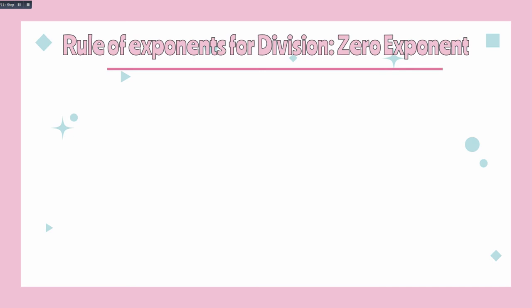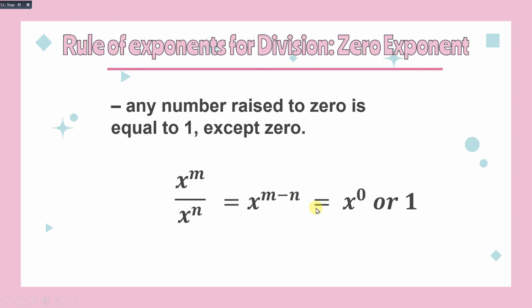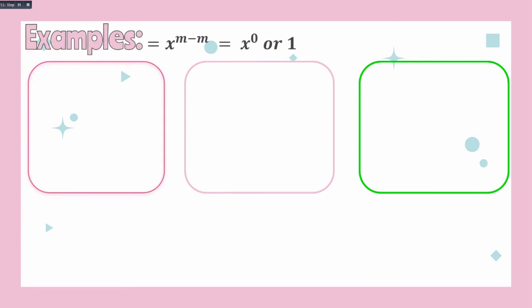Rule of exponents for the zero exponent. Any number raised to 0 is equal to 1, except 0 itself. Using the concept x raised to m over x raised to n, the quotient rule gives x raised to m minus n. When m equals n, that equals x raised to 0, which equals 1. For example: 6 raised to 0 equals 1, and negative 4 raised to 0 also equals 1.